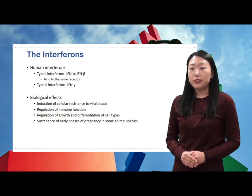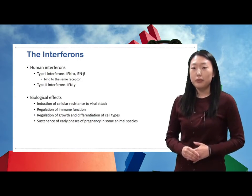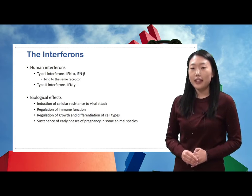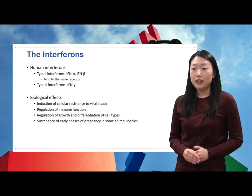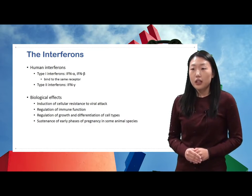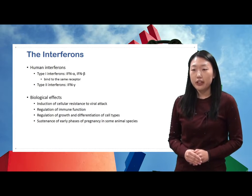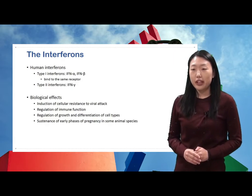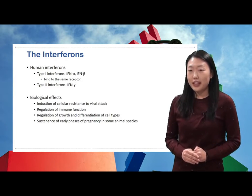Most species, including humans, produce a variety of interferons. Humans produce three classes of interferon: interferon alpha, interferon beta, and interferon gamma. Based on structural differences, these interferons are divided into two groups, type 1 and type 2. Interferon alpha and beta share the same receptor, while interferon gamma binds to a separate receptor and includes a different range of biological activities.